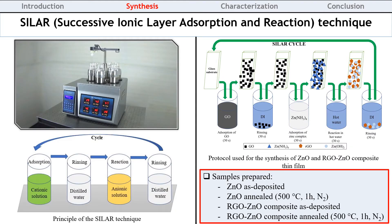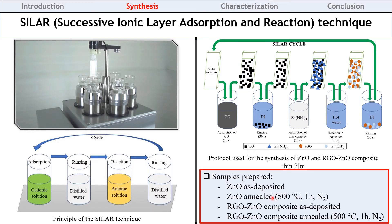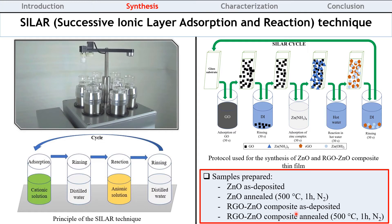We used the CELAR method to prepare ZNO and RGO ZNO composites. The CELAR technique is based on the absorption and reaction of ions from the precursor solution on a substrate. Four samples were prepared: ZNO as-deposited, ZNO annealed, RGO ZNO composite as-deposited, and RGO ZNO composite annealed.